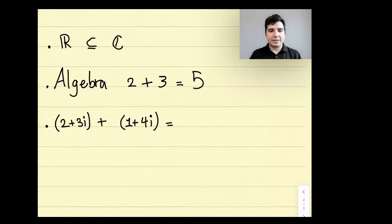So the way we like to define it is as follows. We like to consider the real parts, 2 and 1, and look at their sum, which would be 3, and then consider the imaginary parts, 3 and 4. So 3i plus 4i would be 7i. That's how we want to define the sum of two complex numbers.